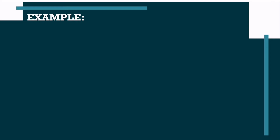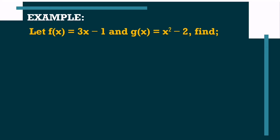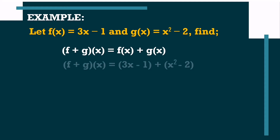Let us start with finding the sum of the given functions. So, f plus g of x is equal to f of x plus g of x. Now, we are going to substitute the given values of f of x and g of x. So, our solution will become f plus g of x is equal to 3x minus 1, plus x squared minus 2.